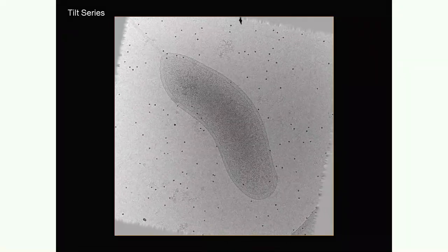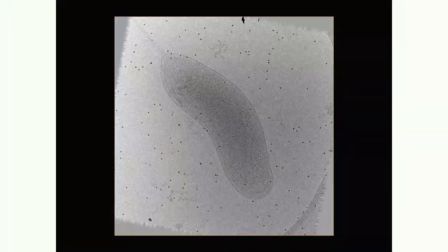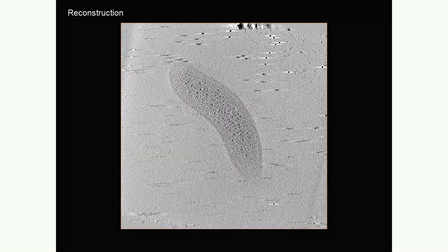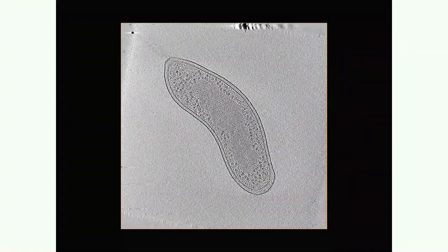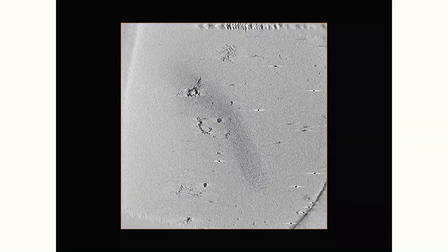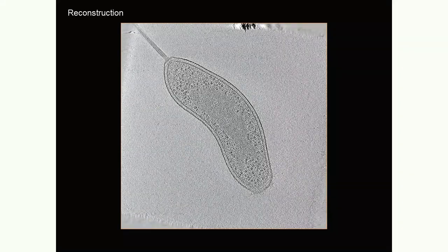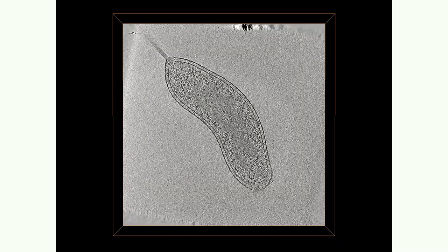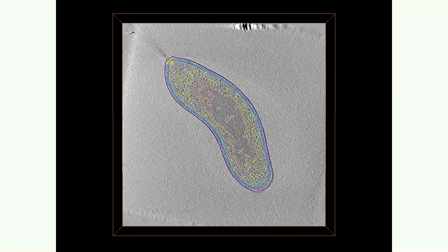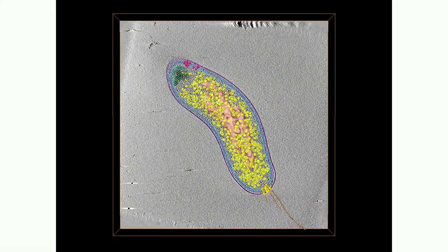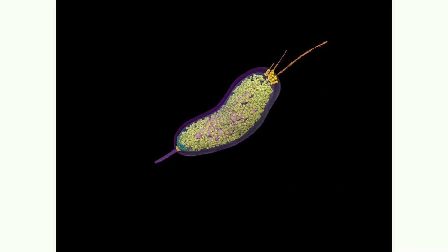This is real data from a Bdello-Vibrio cell — several different tilt series. Using computer programs, we calculate what we call a reconstruction: a 3D reconstruction of the Bdello-Vibrio cell. The sheer amount of information in each one of these datasets is absurd. You have the outer membrane, the inner membrane, the cell wall, the nucleoid, ribosomes, flagellar motor, type 4 secretion, type 4 pili, chemoreceptors, and many other organelles — all in the same cell — while only using a few pixels of it. You can literally make an entire 3D visualization of this cell.